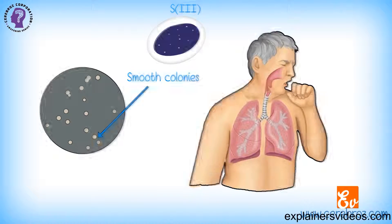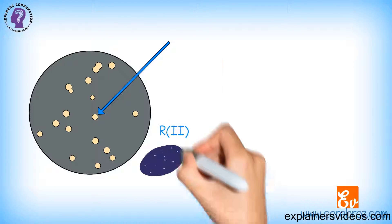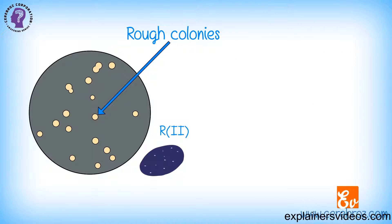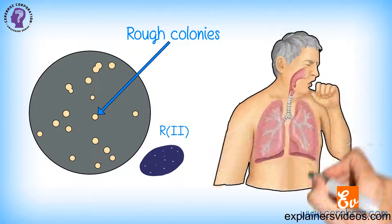And R2, which have no capsule, giving rough colonies R and is avirulent, unable to cause pneumonia.